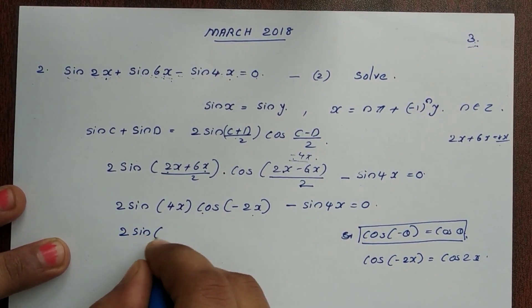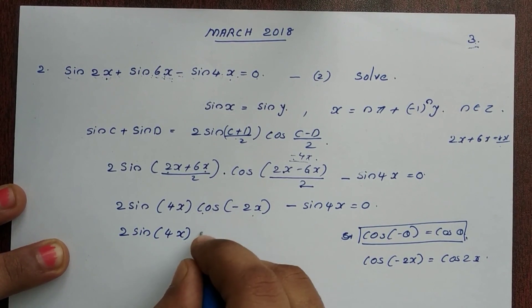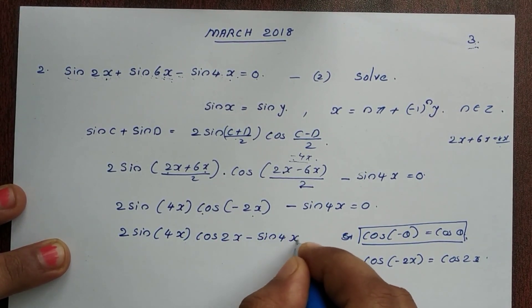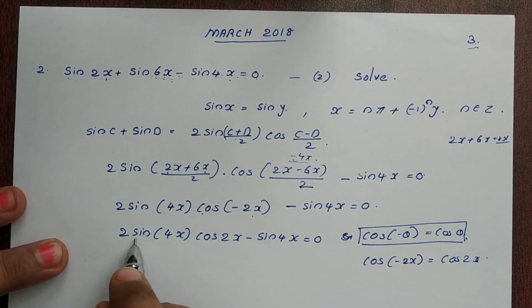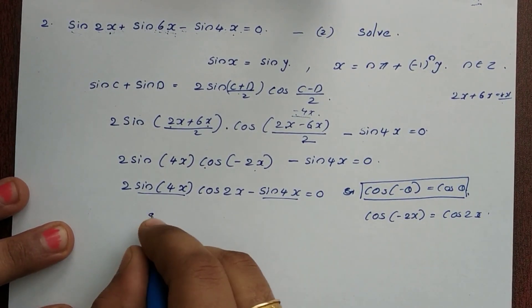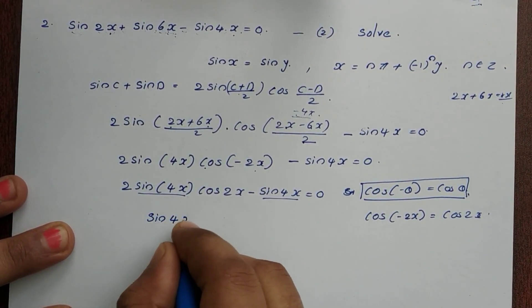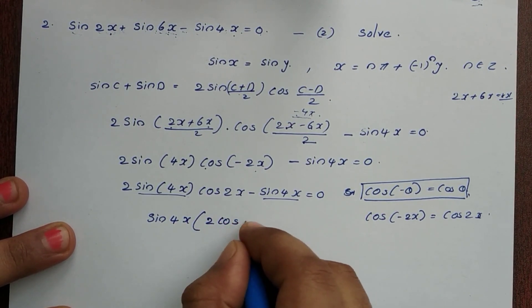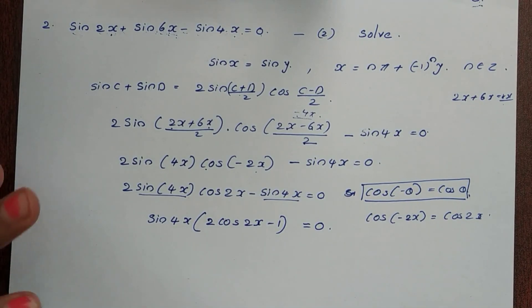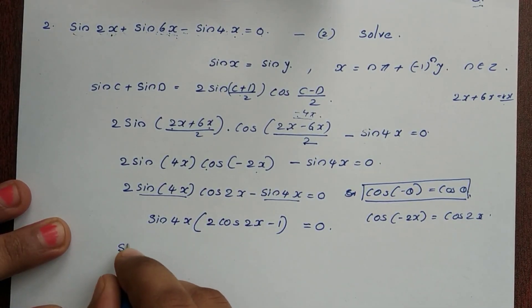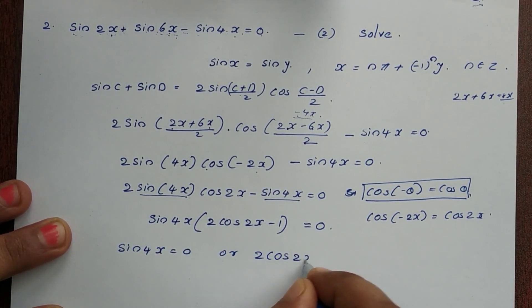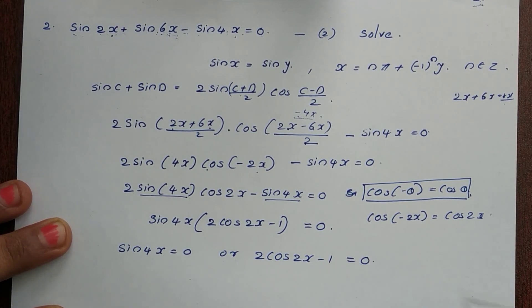This simplifies to: 2sin4x·cos2x minus sin4x equals 0. Now, sin4x is common to both terms, so we factor it out: sin4x · (2cos2x − 1) equals 0.